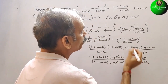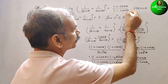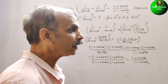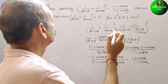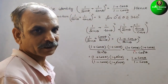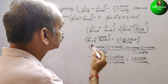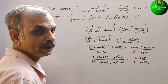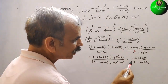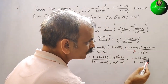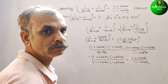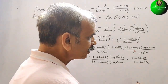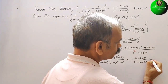Therefore we get (1 + cos θ)/(1 − cos θ), which is the RHS. Hence we have proved the identity. Now for the second part, we solve the equation by setting (1 + cos θ)/(1 − cos θ) = 2.